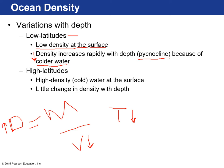Conversely, if temperature goes up — like at the surface at low latitudes — that causes expansion, so volume increases, making the density fraction smaller. Warmer water will be less dense. At high latitudes, the density of surface water is really high and there's very little change in density with depth.